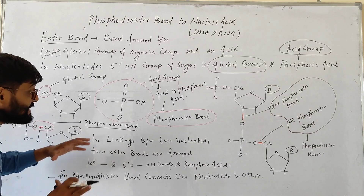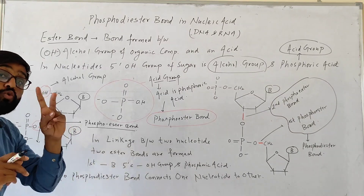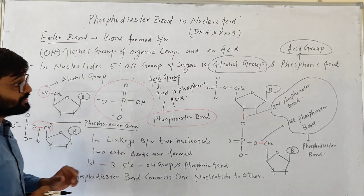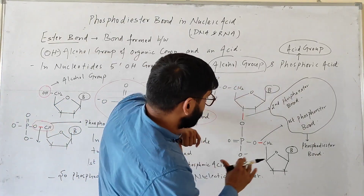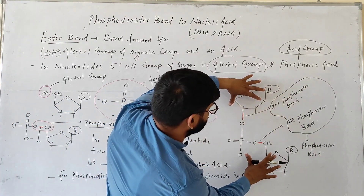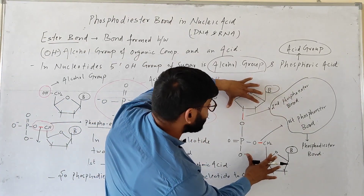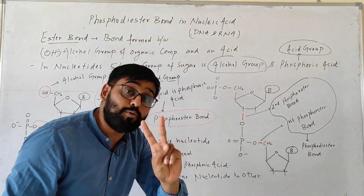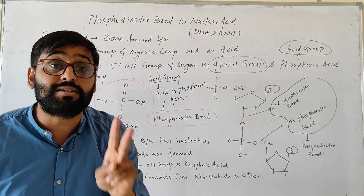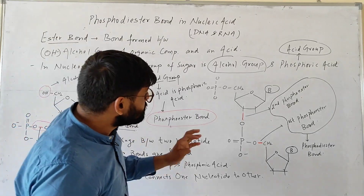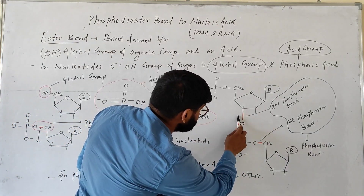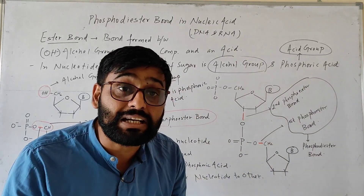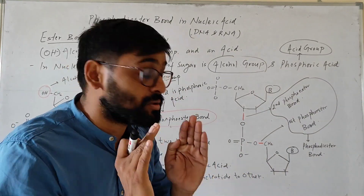Now what is a phosphodiester bond? In the case of linkage between two nucleotides, two ester bonds are formed. So this is the linkage between two nucleotides — this is one nucleotide and this is another nucleotide. When two nucleotides are linked together, two phospho ester bonds are formed, and these two bonds collectively are called a phosphodiester bond.